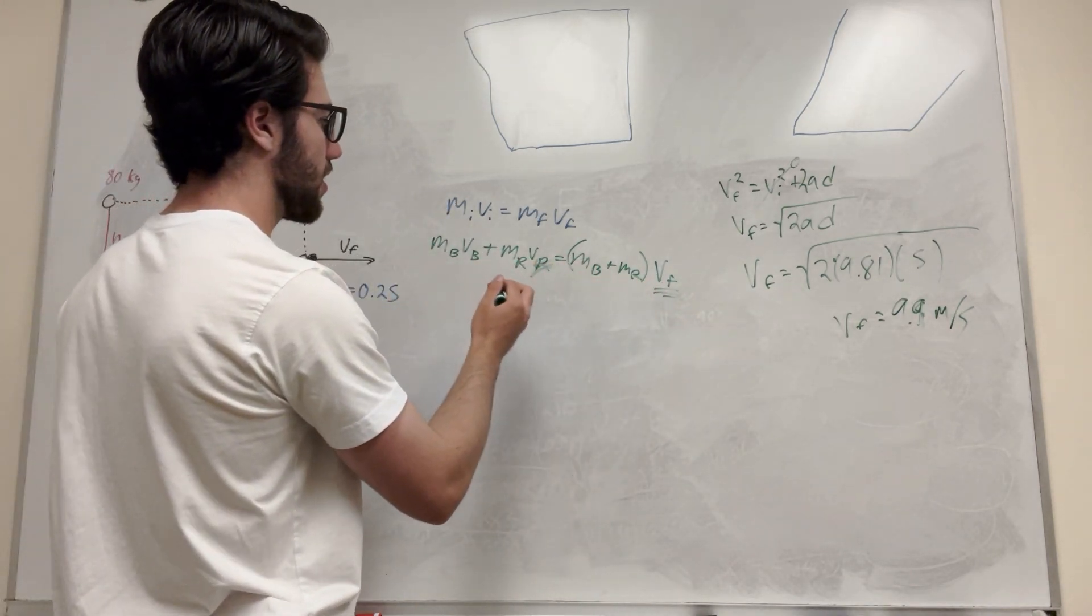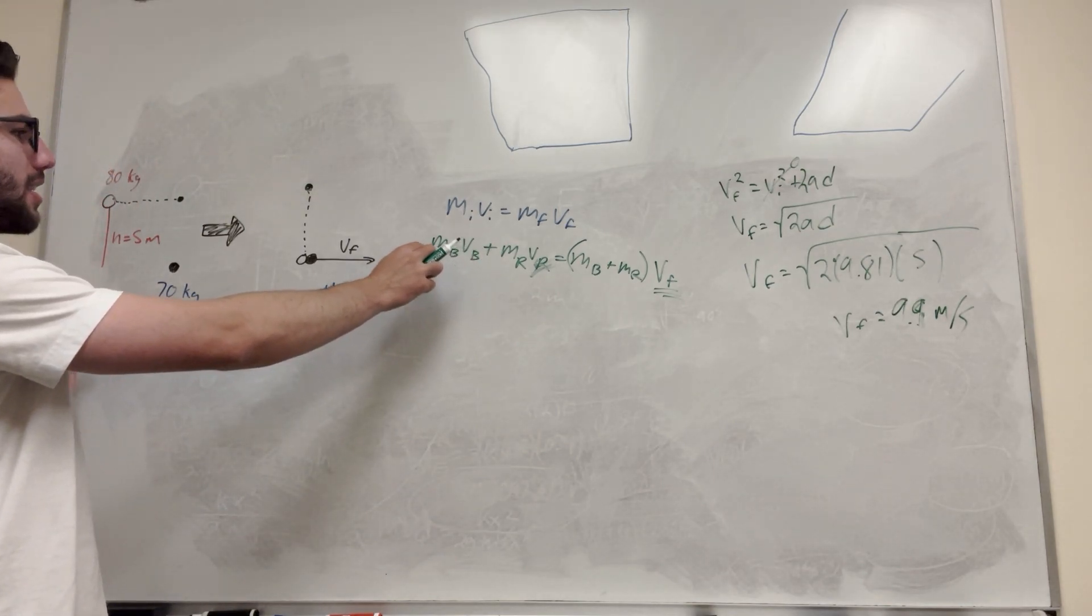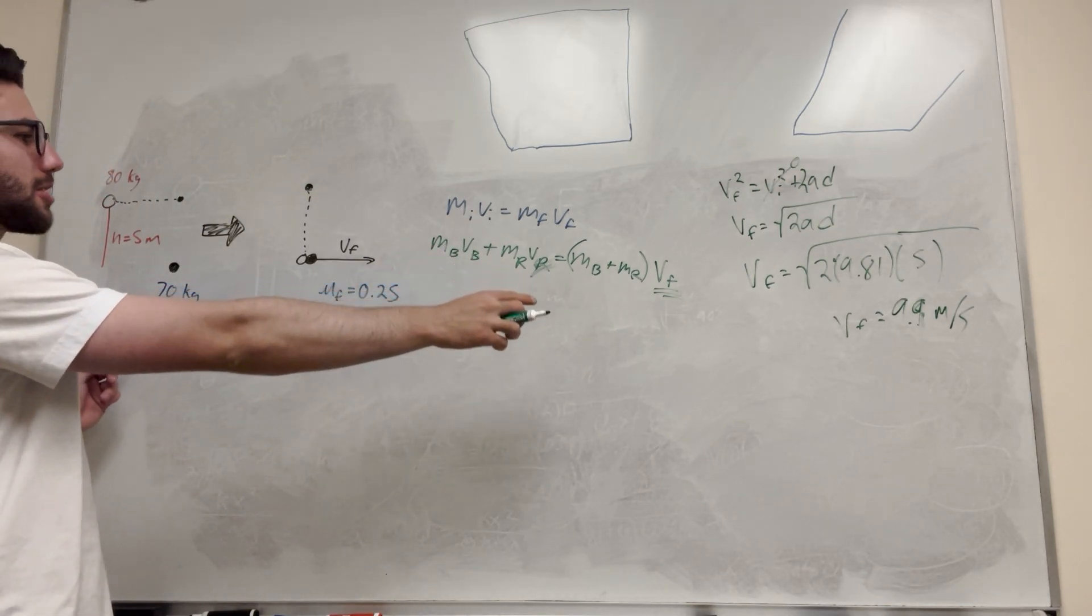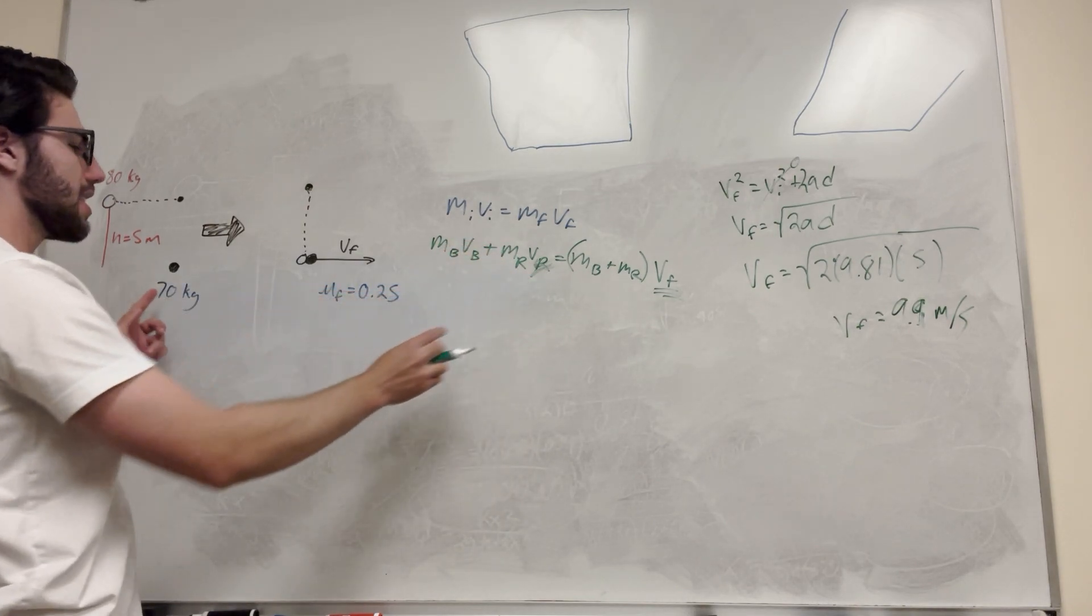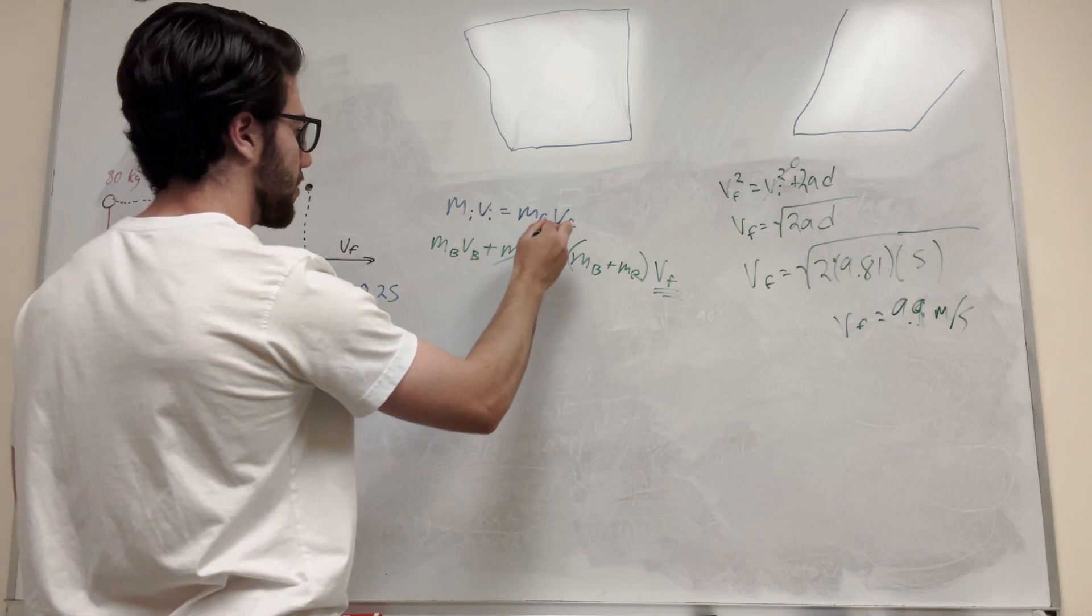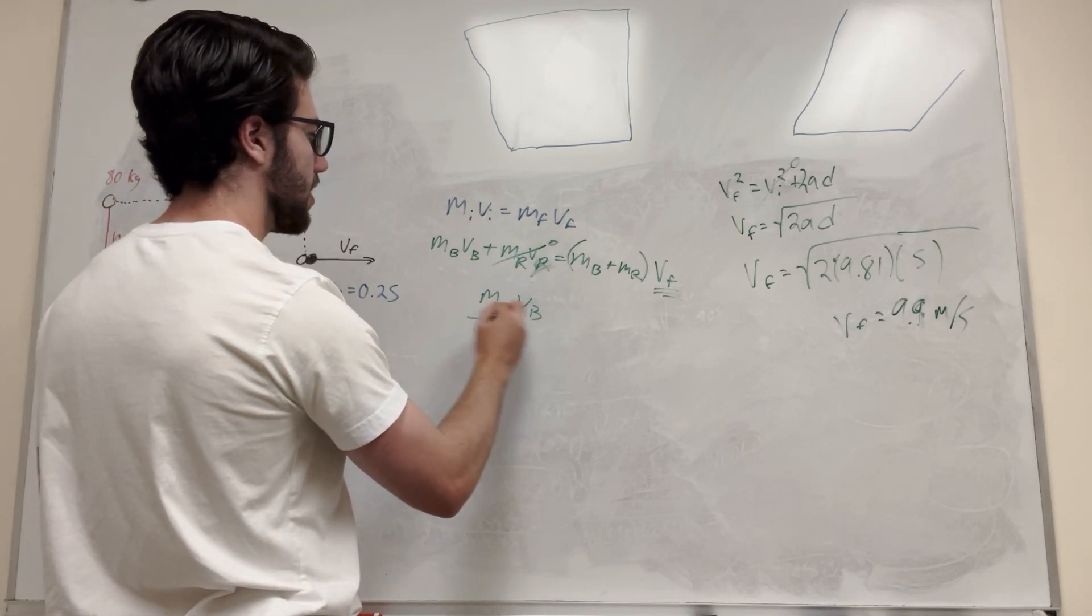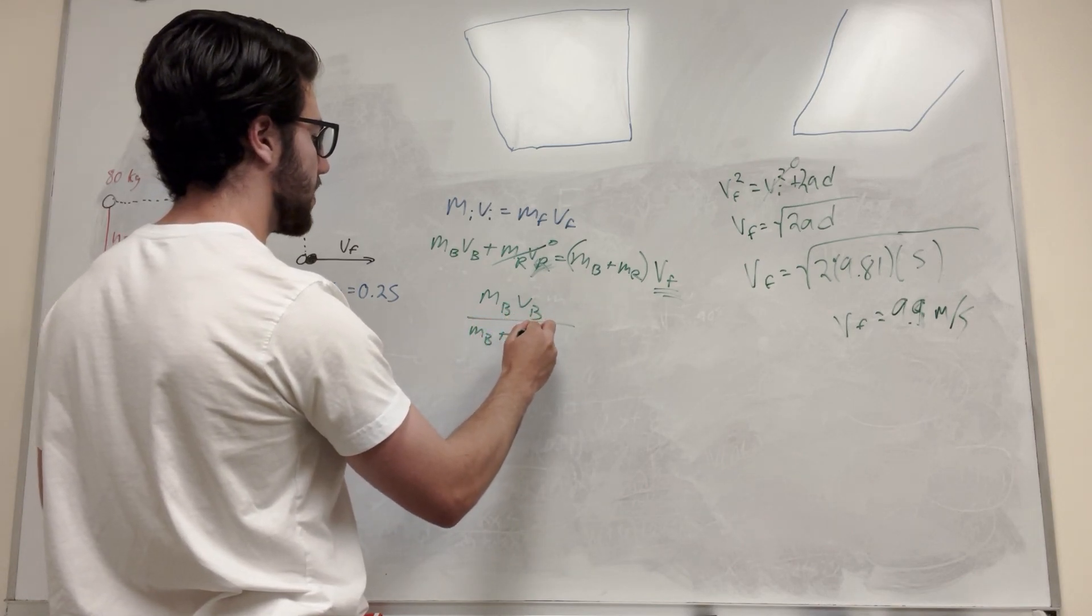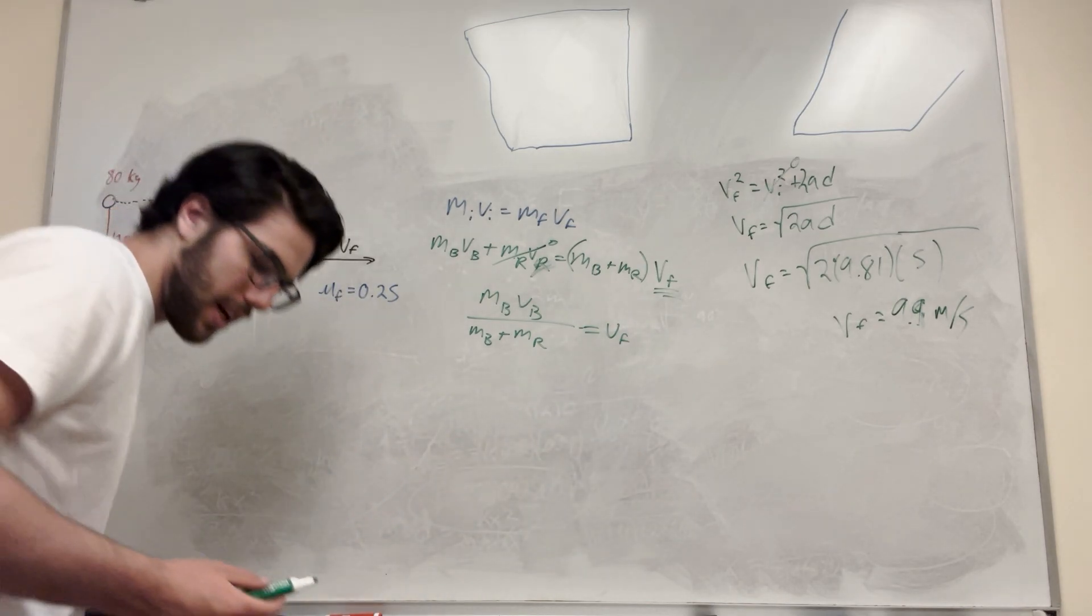So let's look at the left side first. So mass of Batman, velocity of Batman, he's going to have a mass and a velocity at this point, which we found. But then Robin has a mass, but he does not have a velocity because he's standing still. So we can take this to be zero. So mass B, velocity B over mass B plus mass of R is equal to velocity final.